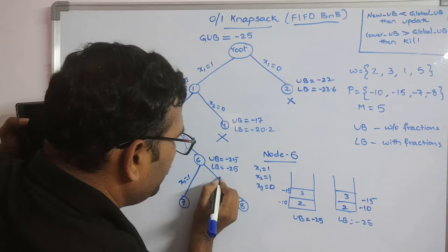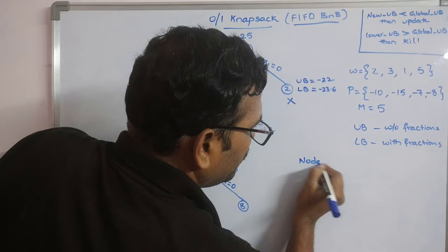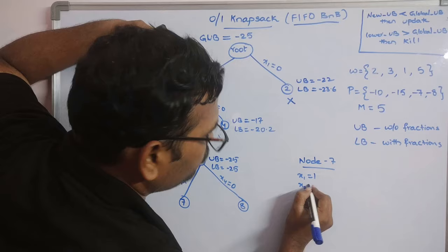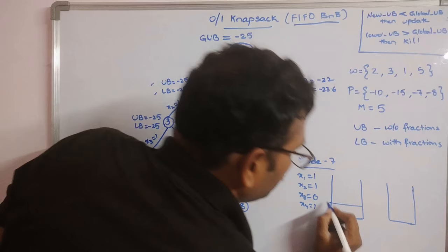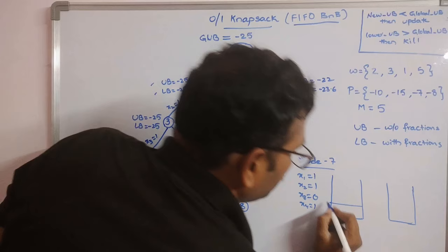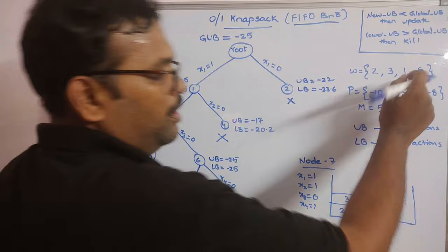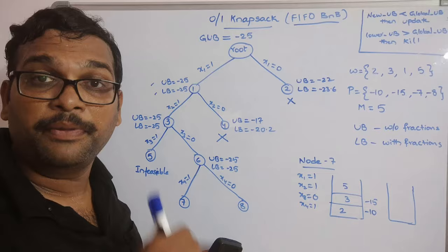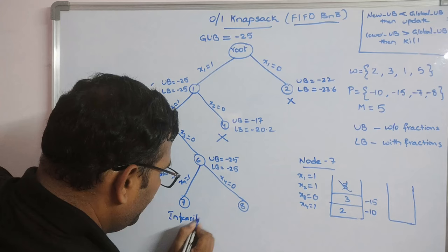From Node 6, branch on the fourth element: Node 7 (x4=1) and Node 8 (x4=0). For Node 7 (x1=1, x2=1, x3=0, x4=1), we consider elements 1, 2, and 4. Inserting weights 2 and 3 fills the knapsack to 5. If we then try to insert the fourth element (weight 5), the total becomes 10, exceeding capacity 5. This is an infeasible solution.